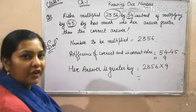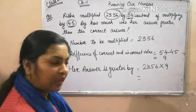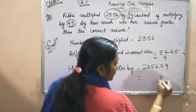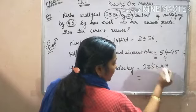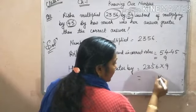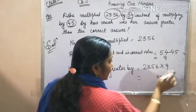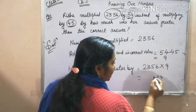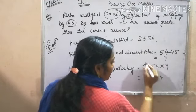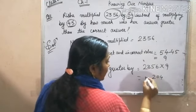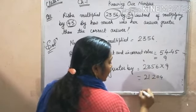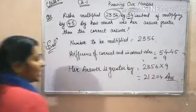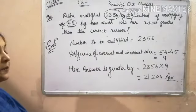Multiply 2356 by 9. 9 times 6 is 54, write 4 carry 5. 9 times 5 is 45 plus 5 is 50, write 0 carry 5. 9 times 3 is 27 plus 5 is 32, write 2 carry 3. 9 times 2 is 18 plus 3 is 21. The answer is 21204.